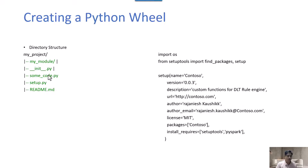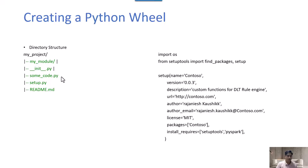In setup.py you put configuration code that you can customize — for example, setting the name as 'contoso', email as contoso.com, license information, and package information. In this case the package name is 'contoso_package' and it requires setup tools and PySpark to be available. It imports os and setup tools and captures the package metadata along with necessary installation requirements.